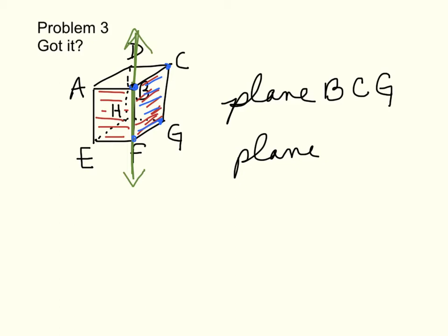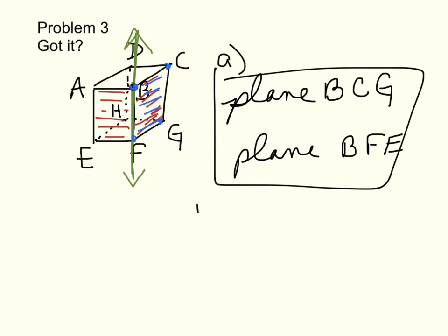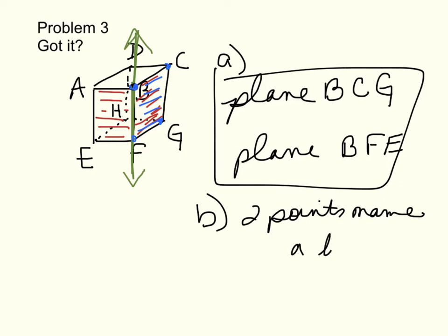You could also have named those planes using other combinations: BEFG on one side, or ABFE on the other. You only need three letters per plane name. Part B asks: why do you only need two common points to name the intersection of two distinct planes? Because the intersection of two distinct planes is a line, and two points name a line.